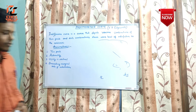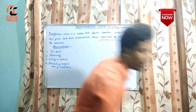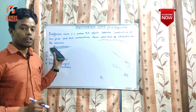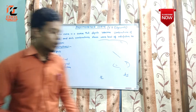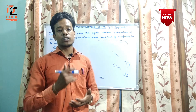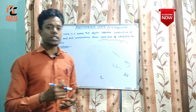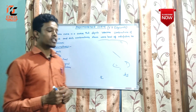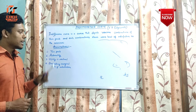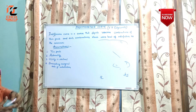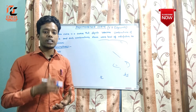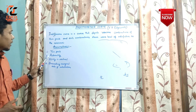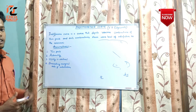The indifference curve is based on certain assumptions. We will understand the assumptions and then draw the diagram to get the complete concept. The first assumption is two goods — it means that the consumer will consume only two commodities. The second is rationality — the consumer behaves rationally.